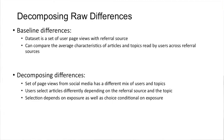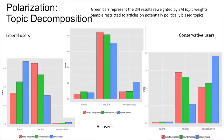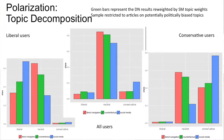What we spend a lot of time on in our paper is decompositions. We have a graphical way to do this. We're going to look only at articles that are potentially politically polarized. In each chart, I'm going to show three bars: the red bars are direct navigation, showing the share on liberal, neutral, and conservative articles across all outlets. The blue bars are the share on social media. Comparing red and blue, we see that direct navigation is more neutral and social media is more polarized on aggregate.